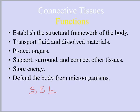Blood and lymph are connective tissues, so connective tissues transport fluid and dissolved materials — like glucose, oxygen, or CO2 in the blood. Connective tissue also protects your internal organs. Bones absolutely do this — your skull protects your brain, your ribs protect your lungs and heart. Adipose, or fat tissue, protects the internal organs of the abdominal pelvic cavity.